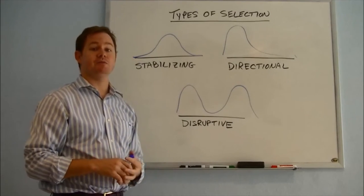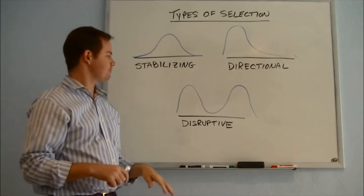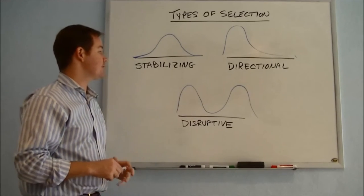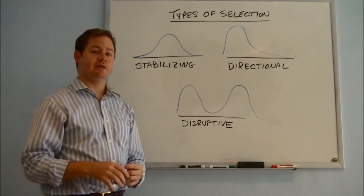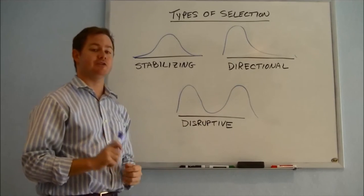So those factors vary from species to species, from organism to organism. But the important thing to understand is visually, if we understand the difference between stabilizing, directional, and disruptive selection, then we'll be in good shape if we see any of this information on the types of natural selection tested.